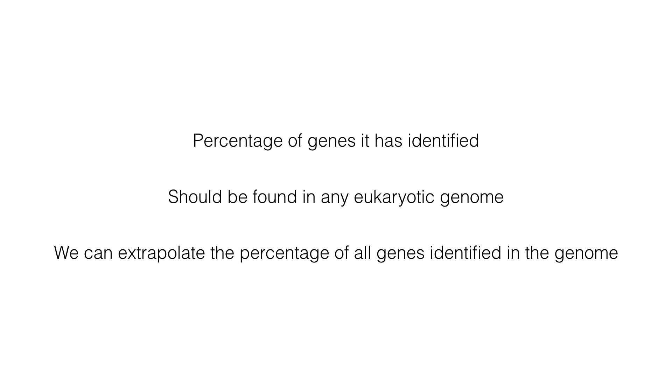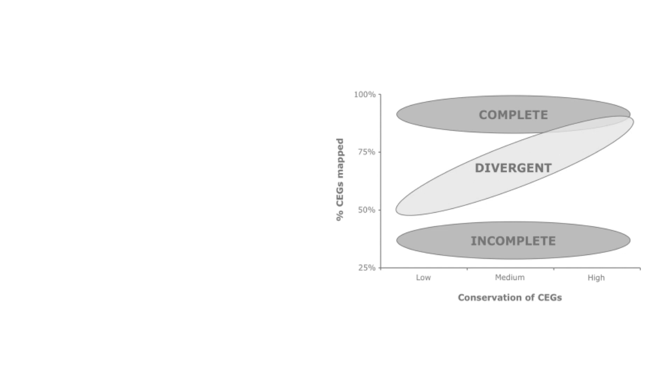A useful estimate of your genome assembly is percentage of genes that has been identified. For this, a set of genes has been described that should be found in any eukaryotic genome. From the percentage of these genes found, we can extrapolate the percentage of all genes identified in the genome. In a program called CEGMA, a set of core eukaryotic genes, CEGs, are identified that are extremely highly conserved and present in low copy numbers in higher eukaryotes.